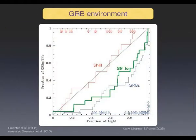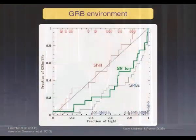This is shown here in the cumulative distribution of GRBs compared to supernovae Type 2 — GRBs are in the most bright regions. If you do the same for supernovae Type 1C, then where supernovae Type 1C are distributed, it's more similar to gamma-ray bursts.